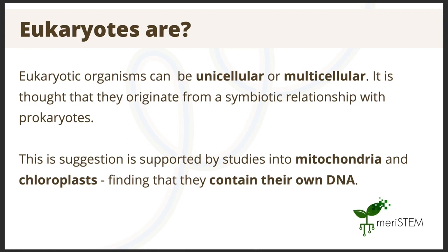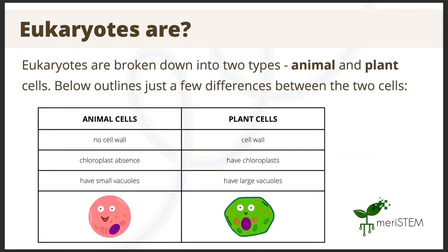It is also important to note that eukaryotic organisms can be further broken down into two subtypes: animal cells and plant cells. Animal cells have no cell wall, do not contain chloroplasts, and have only small vacuoles. Comparatively, plant cells have large vacuoles, a cell wall made from cellulose, and chloroplast organelles. Plant cells have chloroplasts to promote photosynthetic processes, given that they can convert light into chemical energy.